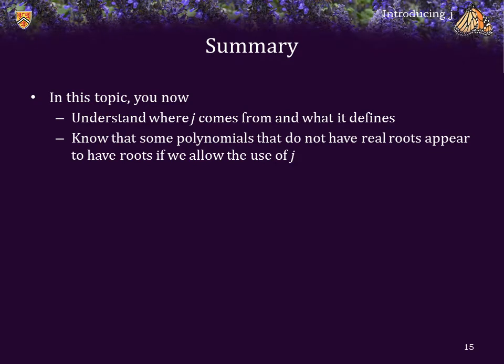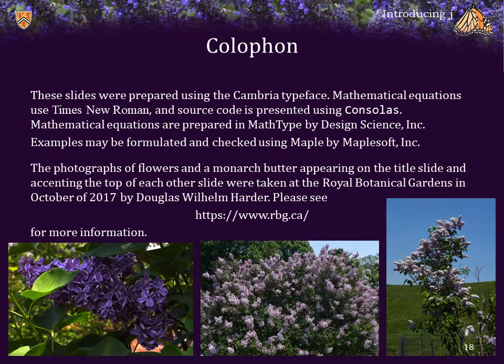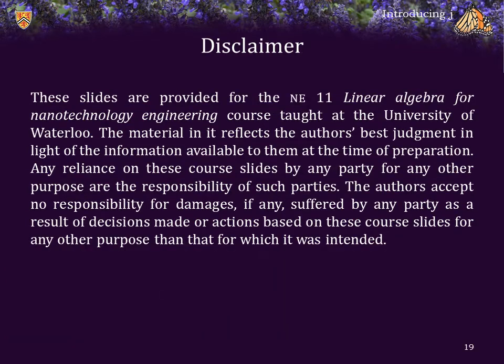In this topic, you understand where the concept of j comes from — it's simply the square root of negative 1. You also know that some polynomials that do not have real roots do appear to have roots if we allow this imaginary value j, which is the square root of negative 1. And we saw a few extra properties. Cheers!